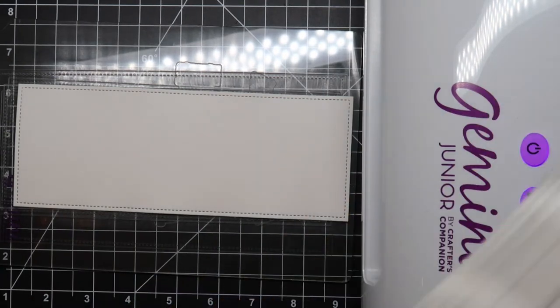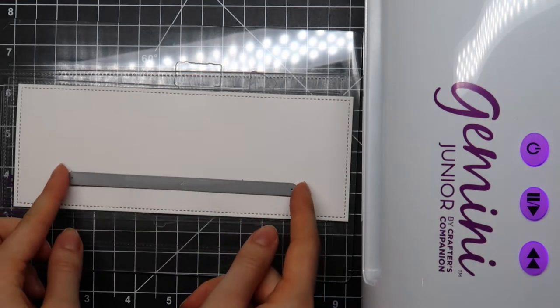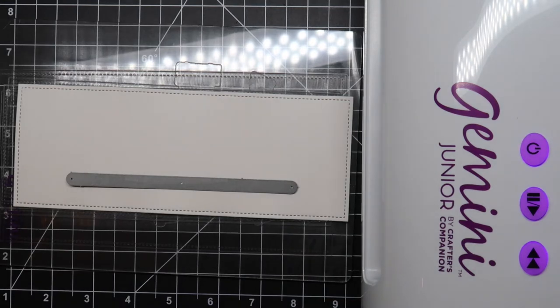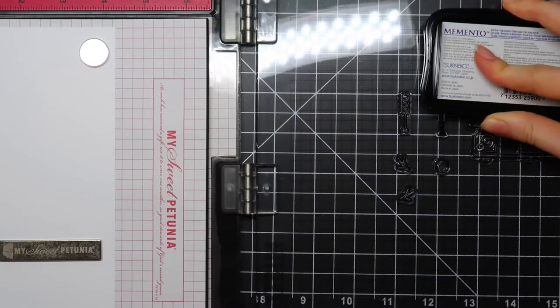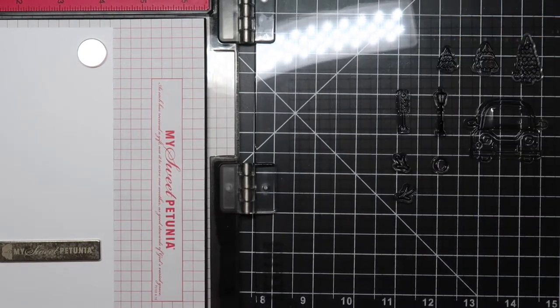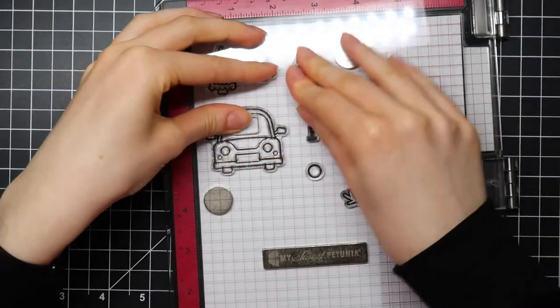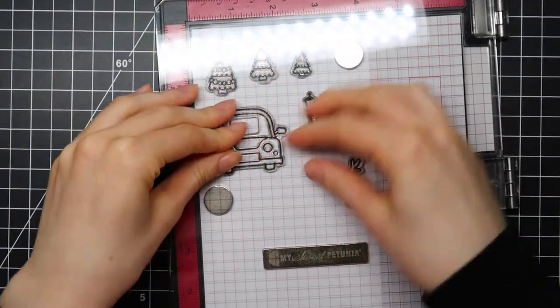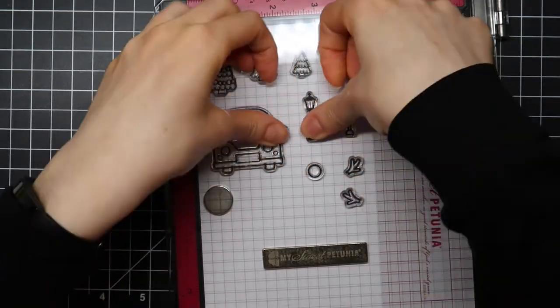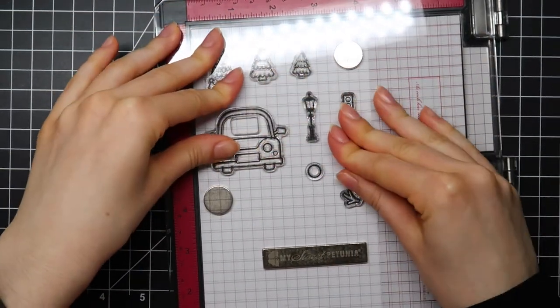I started by die cutting my base for my card using a stitched rectangle from the large slimline with sliders die cut set from Lawn Fawn. Then I die cut the little slot to create the slider and also used a border from the slimline stitched hillside border die cut set. I ran all of that through my Gemini Junior die cutting machine.